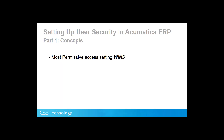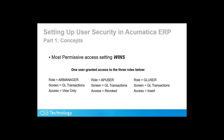One other thing you need to understand about access rights is that the most permissive access wins. For example, a user has three roles assigned: AR Manager, AP User, and GL User. All three roles have the GL transaction screen defined. The AR Manager has View Only, the AP User is Revoked meaning no access, and the GL User has Insert. Since Insert is the most permissive, the user with these three roles would have Insert access to the GL transaction screen.